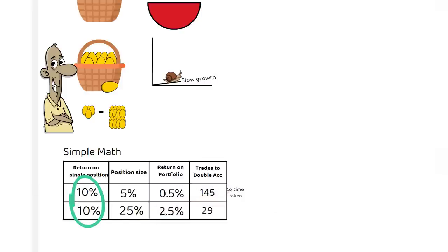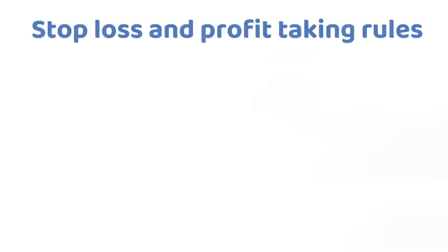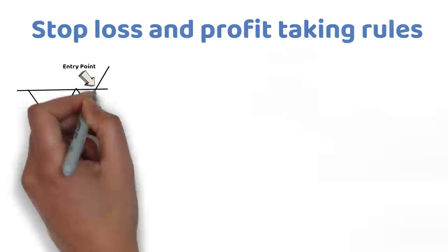The third important aspect of swing trading, or trading in general, is stop loss and profit taking rules. In swing trading, you should set your stop loss based on the technical structure in a price chart, and only take trades that give you a low risk entry point.